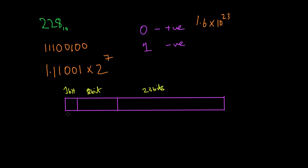The sign bit is 0 if the number is positive, and 1 if the number is negative. Since our number is positive, the sign bit is 0. We call the first bit the sign bit: 0 for positive, 1 for negative. The second part is the exponent, which is 2 raised to 7.